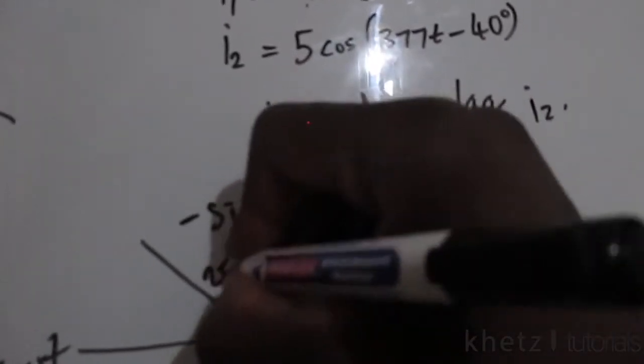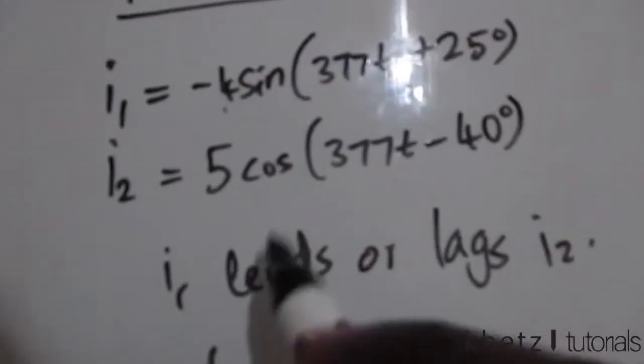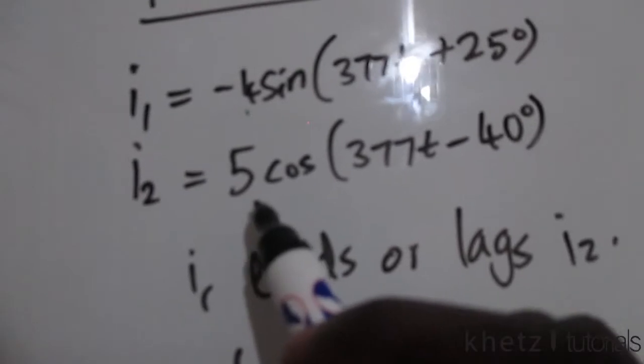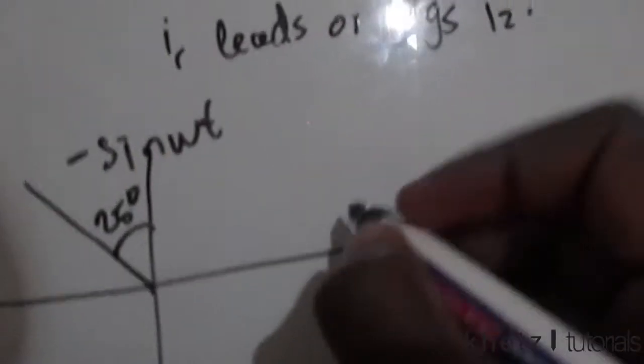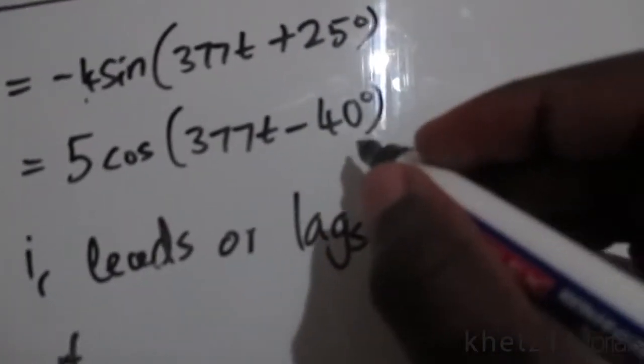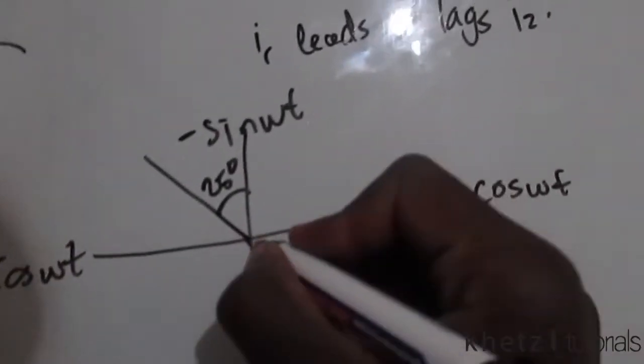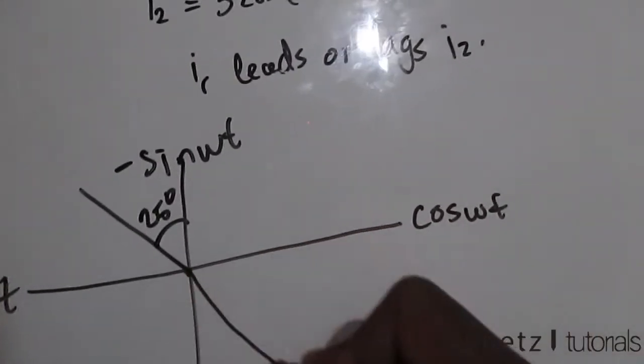Now looking at the second one, it's 5, which is positive 5, and it's a cosine, so we're going to go to the positive cosine which is over here and measure negative 40. This is negative, so it goes in the clockwise direction, which is this direction, and therefore we're going to measure 40 degrees.